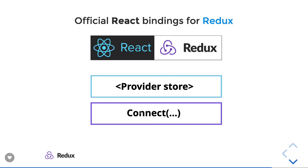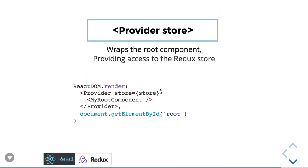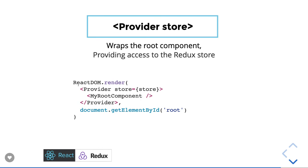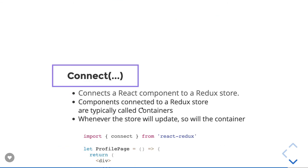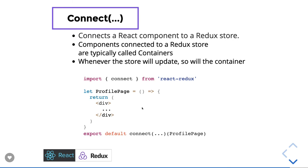Redux plays an important role in creating higher order components. Provider is the tag under which you have to wrap all your React components — like ReactDOM.render with Provider passing the store and the root component. Connect is what connects a React component with the Redux store, exposing your component to the Redux store so that it can access the state or trigger actions to the Redux layer.